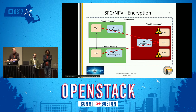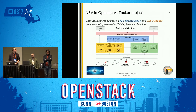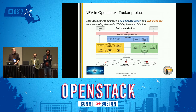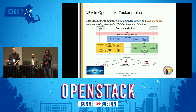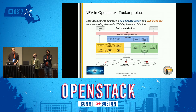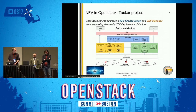Back to OpenStack — it provides a nice tool to do network function virtualization, managing all those network functions and orchestrating the different chains you can have. It's called Tacker. The architecture has two big blocks: orchestration, which chains the different network functions together, and management of the virtual network function itself, where you create, delete, or update the network functions.